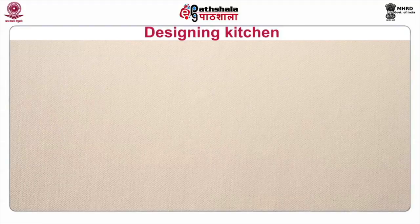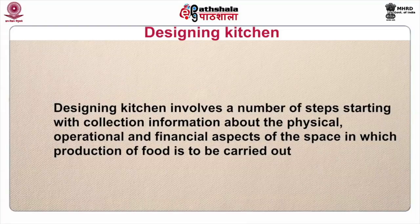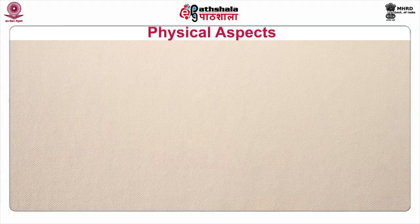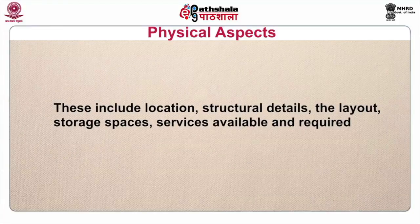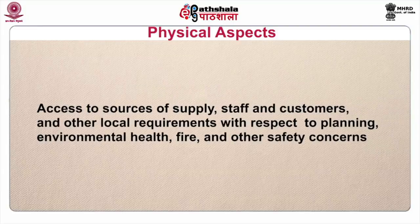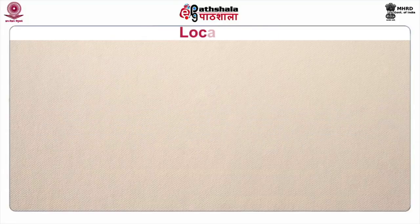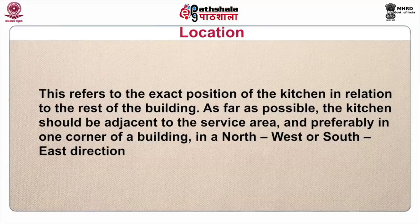Designing a kitchen involves a number of steps, starting with collecting information about the physical, operational and financial aspects of the space in which food production is to be carried out. Physical aspects include location, structural details, the layout, storage spaces, services available and required, access to sources of supply, staff and customers, and other local requirements with respect to planning, environmental health, fire and other safety concerns. As far as possible, the kitchen should be adjacent to the service area and preferably in one corner of a building.